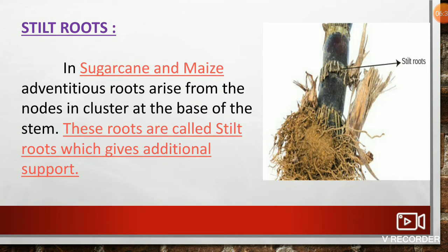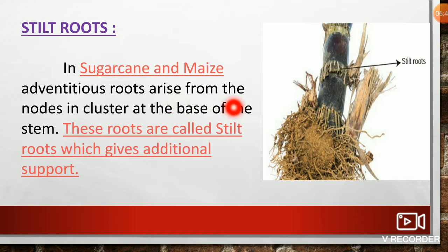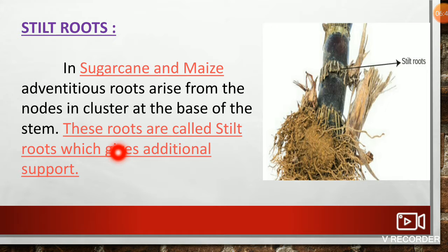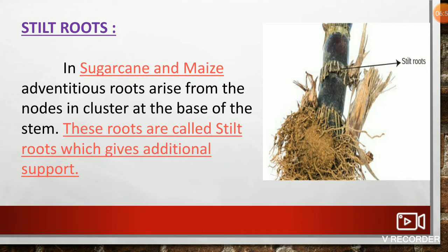Stilt roots: In sugarcane and maize, adventitious roots arise from the nodes in clusters at the base of the stem. These roots are called stilt roots, which give additional support to the plant.